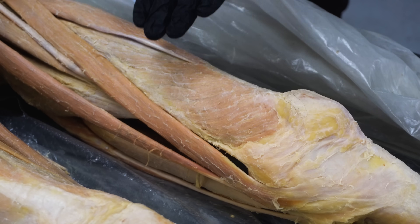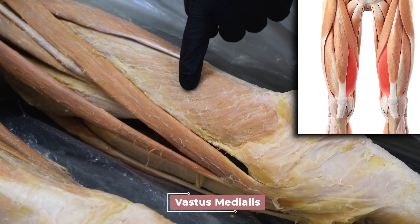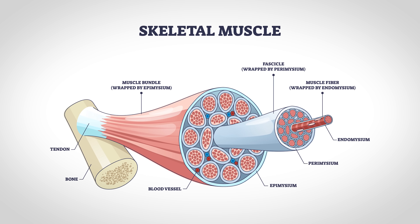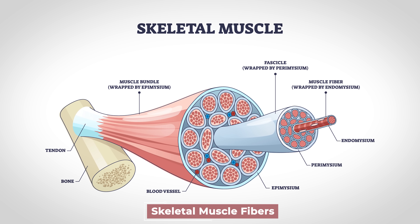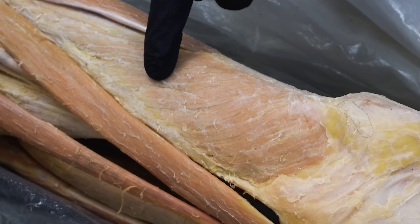Let's start by taking a look at the cadaver dissection and use a specific muscle as an example. Here we have the vastus medialis, one of the four muscles that makes up the quads. Each skeletal muscle is made up of hundreds to thousands of skeletal muscle cells, also known as skeletal muscle fibers. If you were to look at all of the muscle fibers making up this vastus medialis, you would see that not all the muscle fibers are the same — some would be considered fast twitch and some slow twitch.